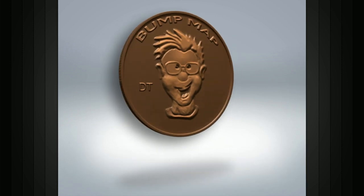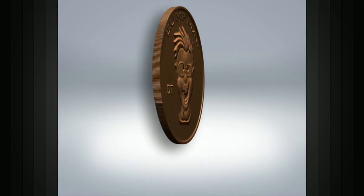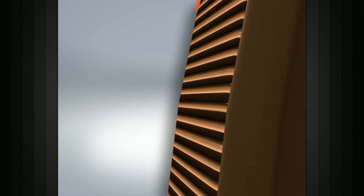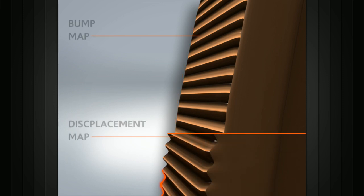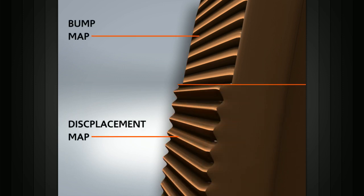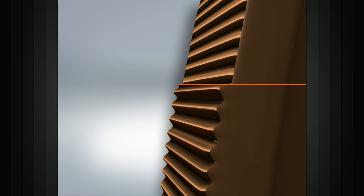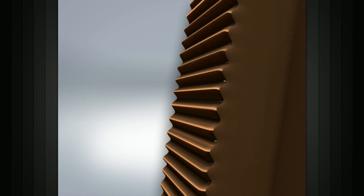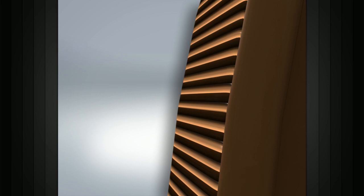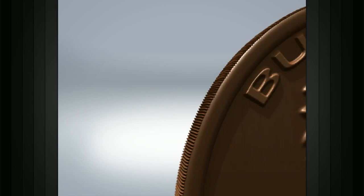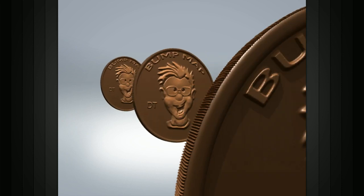The major downfall of bump maps appears at the close edges of the surface, or really the profile of the object. Unlike a displacement map, which actually alters the shape of the surface based on the image you're providing, a bump map is only adjusting the surface normals. Thus, it creates a faster render, but it really doesn't hold up under close scrutiny.